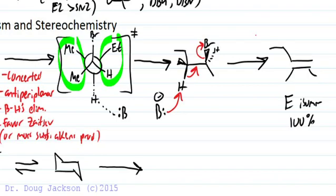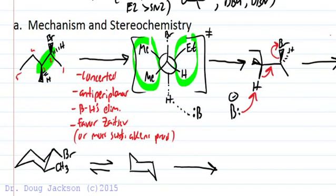So this is a stereospecific, concerted, anti-periplanar elimination. And if we'd had different stereochemistry in the starting material, we could have gotten a different product. We could have gotten the Z with different stereochemistry in the starting material.